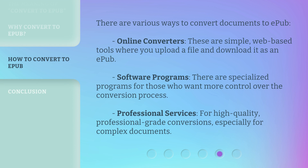There are various ways to convert documents to EPUB. Online converters are simple, web-based tools where you upload a file and download it as an EPUB. Software programs offer more control over the conversion process for those who need it. Professional services are available for high-quality, professional-grade conversions, especially for complex documents.